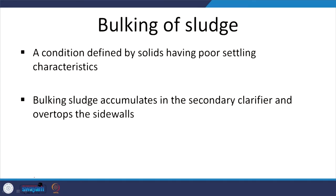Bulking of sludge — what do we have? We have poor settling, and why is that? Because of the different kinds of microbes that thrive. The microbes we want are typically floc-forming microbes that have lower surface area per unit mass. But filamentous microbes have greater surface area per unit mass and they are not going to settle down.